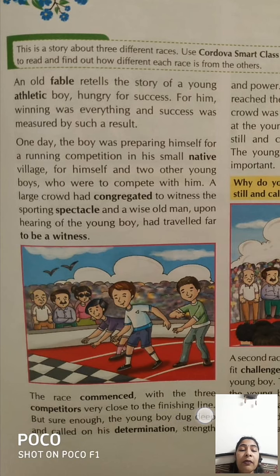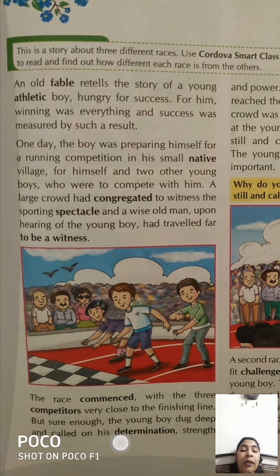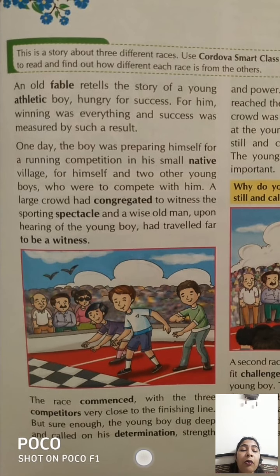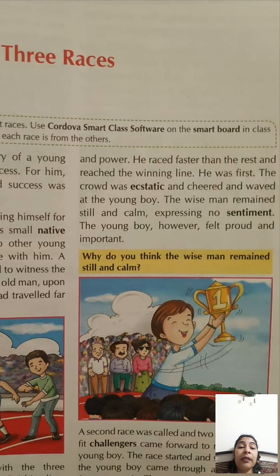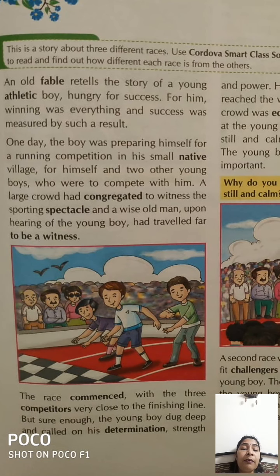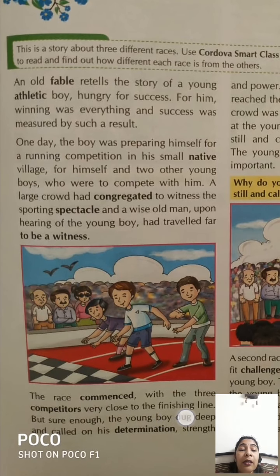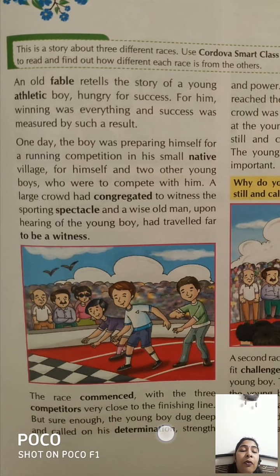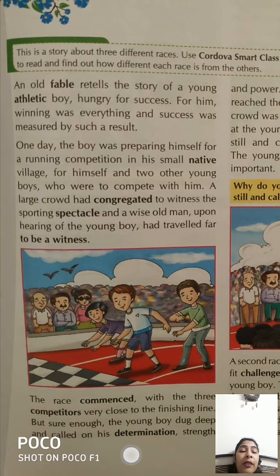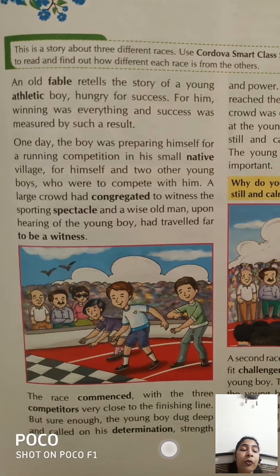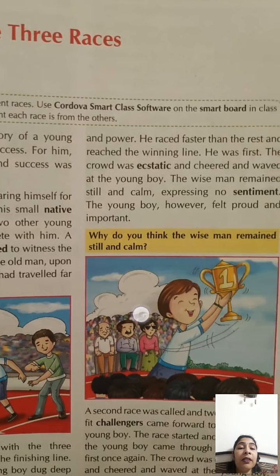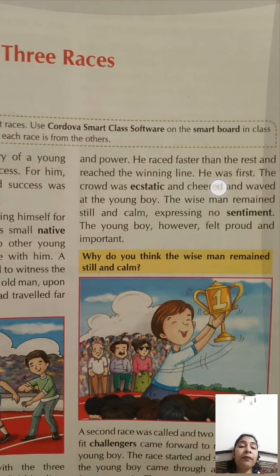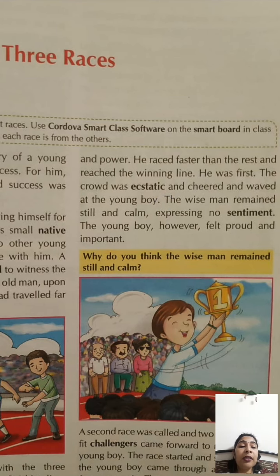The race commenced — commenced means started — with the three competitors very close to the finishing line. But sure enough, the young boy dug deep and called on his determination, strength and power. He raced faster than the rest and reached the winning line. Determination means the thing about which we are very sure — he was very sure he was going to win.